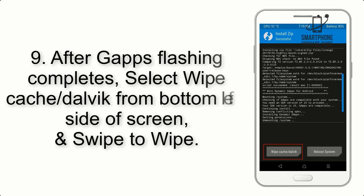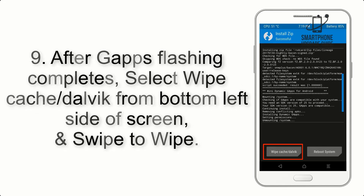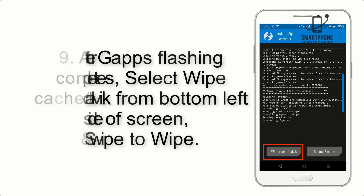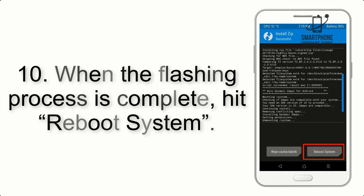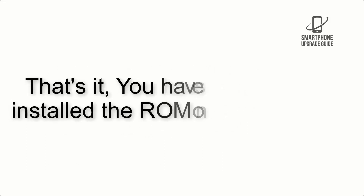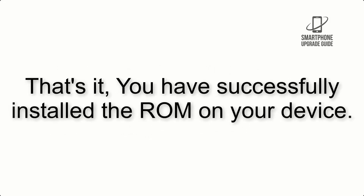Step 8: Flash the GApps zip package in the same manner. Step 9: After GApps flashing completes, select Wipe Cache and Dalvik from the bottom left side of the screen and swipe to wipe. Step 10: When the flashing process is complete, hit Reboot System. That's it — you have successfully installed the ROM on your device.